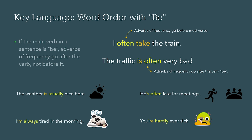Now, we talked a little bit about how to form a sentence with just adverbs of frequency. Let's look at how to form sentences with the be verb form. When the main verb in the sentence is 'be,' adverbs of frequency go after that verb, not before it. For example: 'I often take the train' — the adverb goes before most verbs. But with the be verb form, 'The traffic is often very bad' — the adverb goes after.